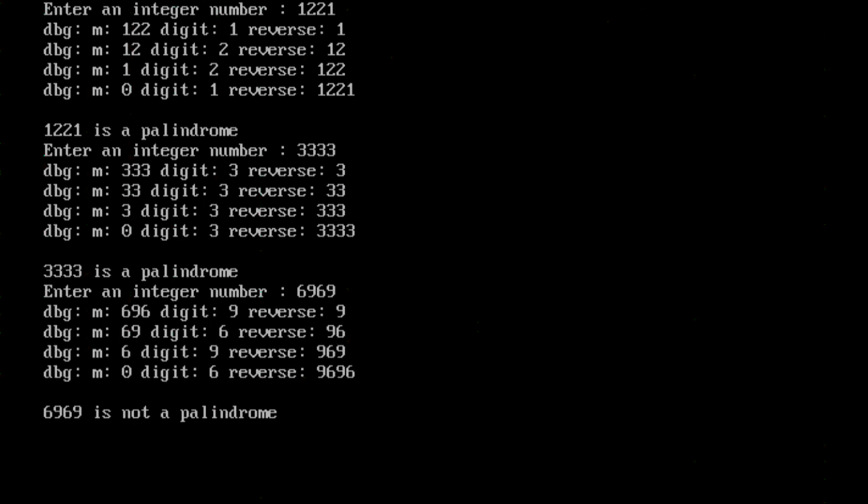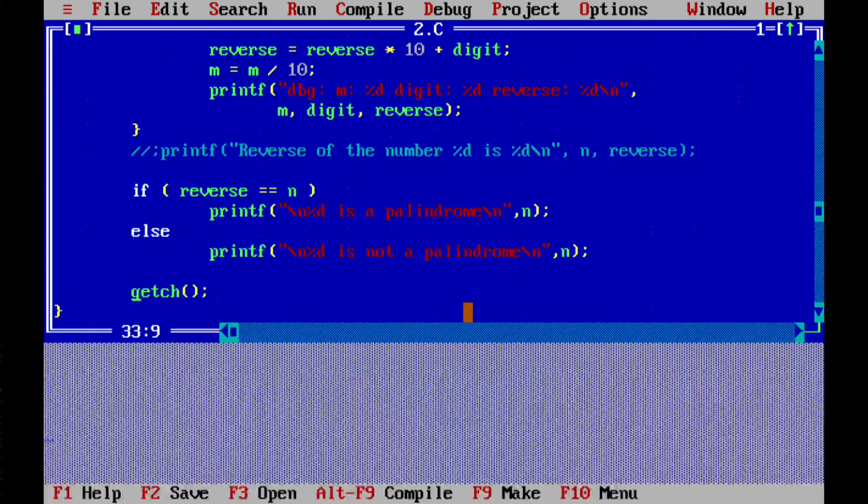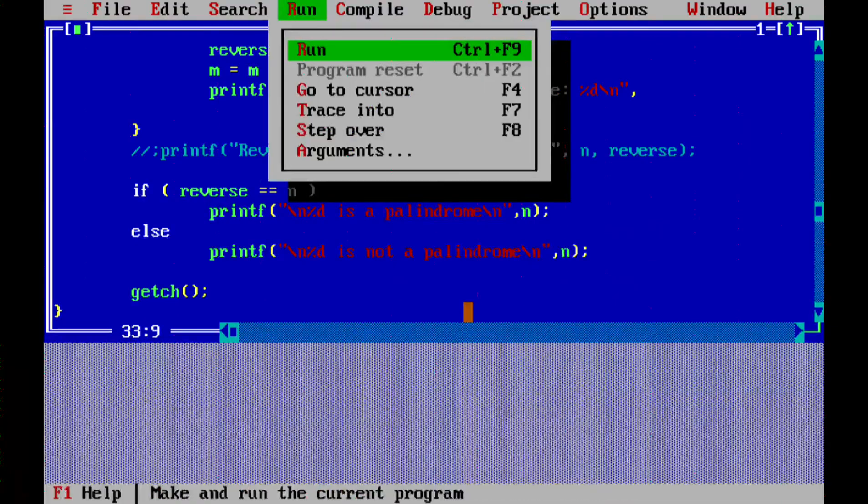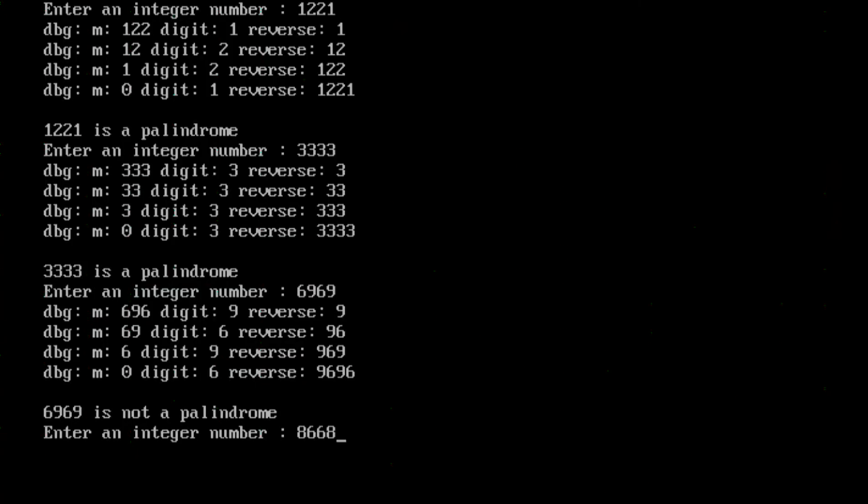The next one is 6969. It's pretty confusing but it is not a palindrome because 6969 becomes 9696, which is not a palindrome.